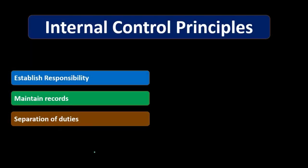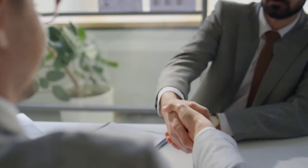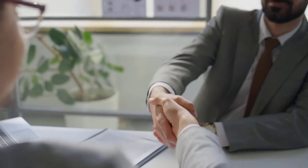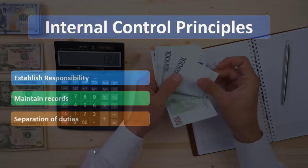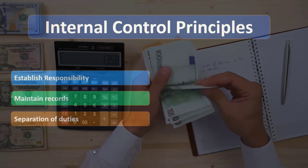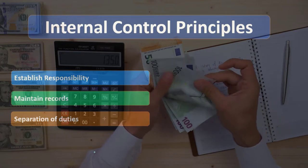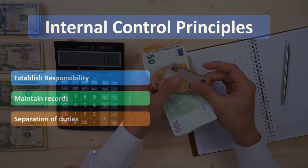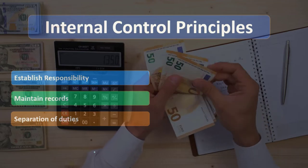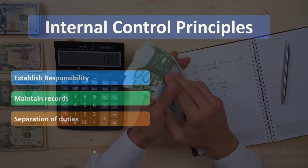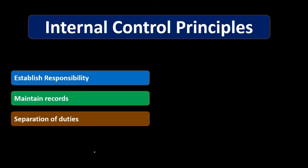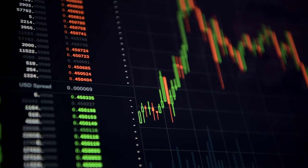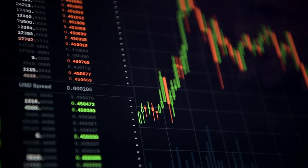We want to understand separation of duties when working within a system, because someone might think it would be faster to do two things together. We need to realize there's a reason we can't — that's part of the internal control system and part of the bureaucracy that comes as companies grow. It helps safeguard assets but can also lead to more steps within a process.